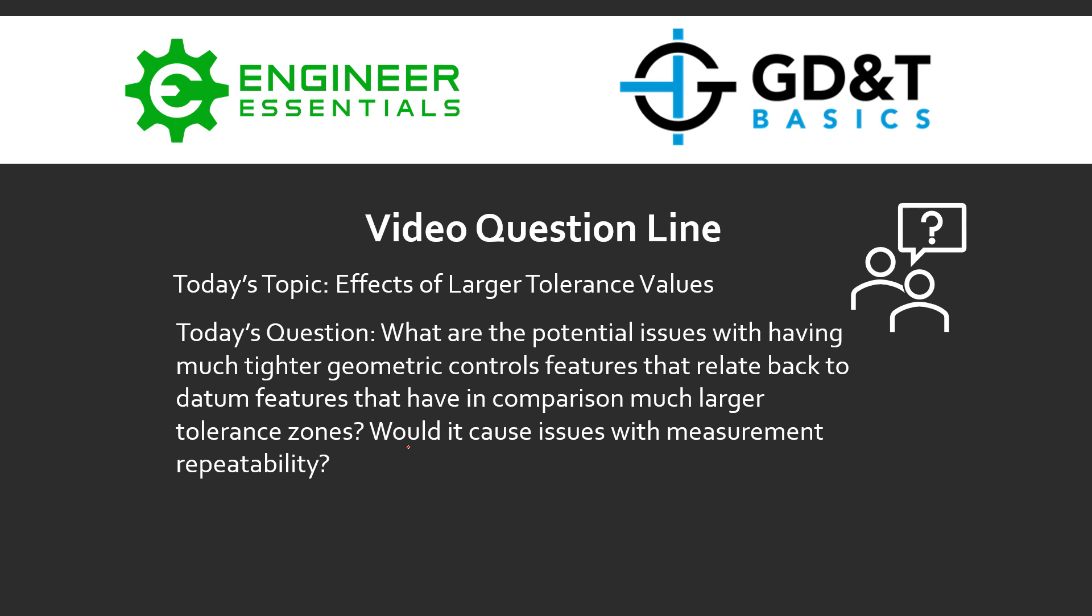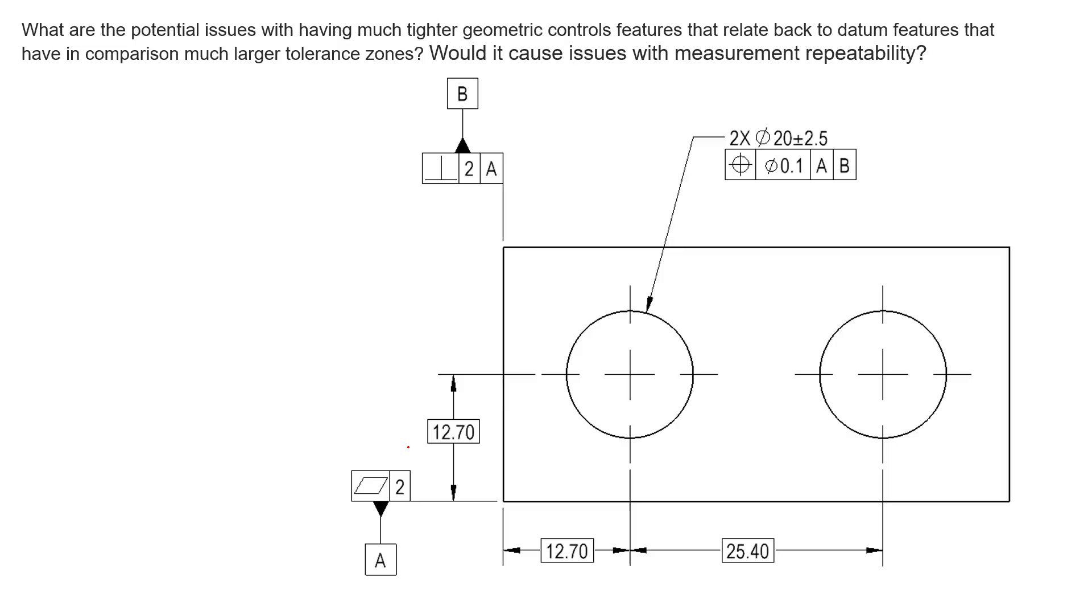Hey everybody, Jason here again with GD&T Basics and the video question line. Today's topic is effects of larger tolerance values. The question submitted was: what are the potential issues with having much tighter geometric control features that relate back to datum features that have, in comparison, much larger tolerance zones? Would it cause issues with measurement repeatability?